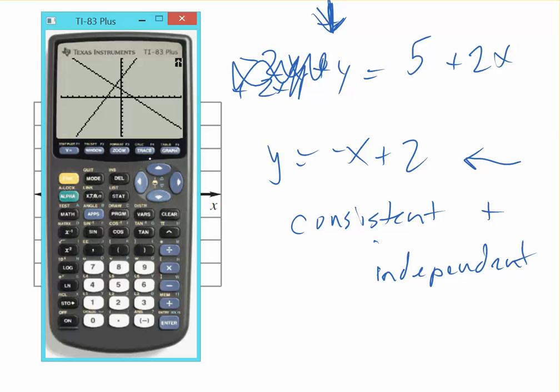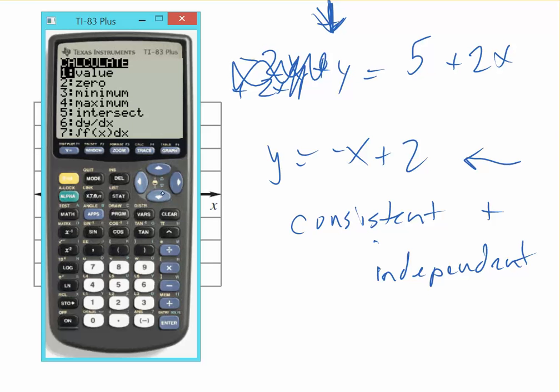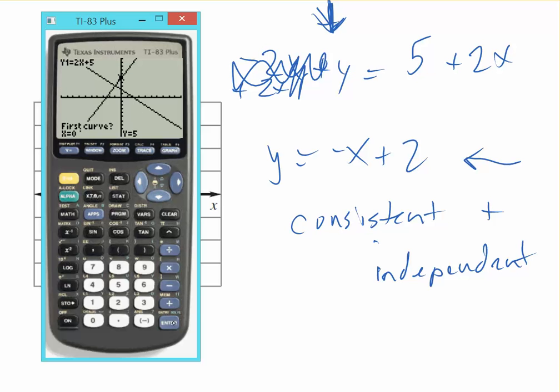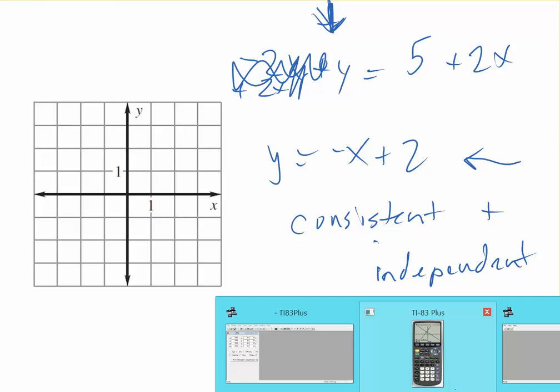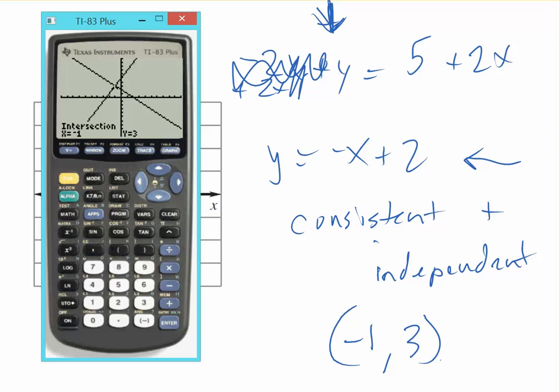And let's find what the solution actually is. So on your calculator, of course, second. Calculate. Intersect. First curve. Okay. Second curve. Okay. Make a guess. I'm going to laugh at my calculator. Of course, I'm not going to make a guess. And it tells me negative 1, 3. So the intersection is negative 1, 3. That's the solution of this.